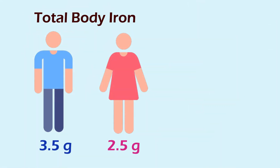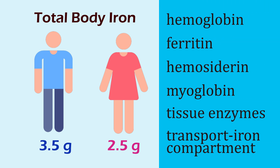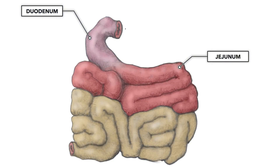Total body iron is about 3.5 grams in healthy men and 2.5 grams in women, and it is distributed in hemoglobin, ferritin, hemosiderin, myoglobin, tissue enzymes, and the transport iron compartment. Iron is absorbed in the duodenum and upper jejunum.